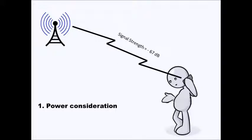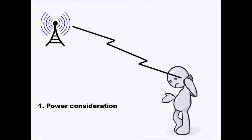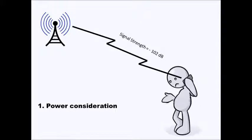The first need for handoff is power consideration. Consider a person in one cell communicating with another person using the signal from the cell's antenna. For example, if the signal strength or power received by the mobile system is minus 67 dB, then the power received is good and there is no need for handoff. But if the power received starts decreasing — for instance, if the strength becomes minus 102 dB — the signal becomes weak and it will be difficult to maintain the call. In this case, the mobile needs to find another signal with higher strength. Thus there is a need for handoff when the power level decreases below a certain threshold level.